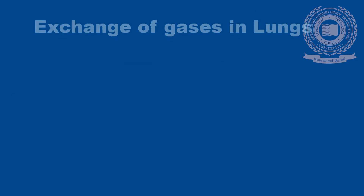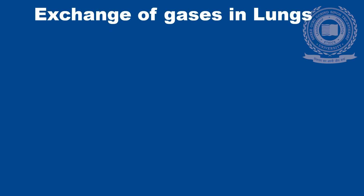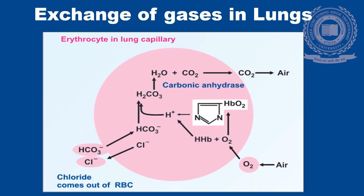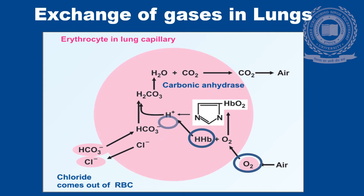How does the exchange of gases in lungs take place? The oxygen that we inhale comes into the alveoli, and through the alveoli it binds to the hemoglobin, forming oxygenated hemoglobin. Then deprotonation of hemoglobin occurs.